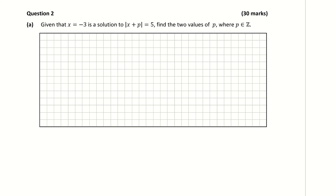This is the solution to question 2a. Given that x is equal to minus 3 is a solution to the modulus of x plus p is equal to 5, find the two values of p where p is an element of z, the integers.